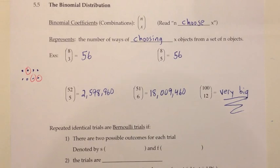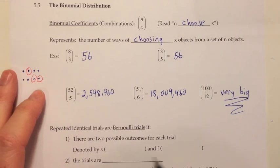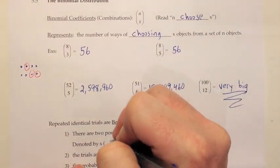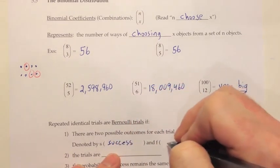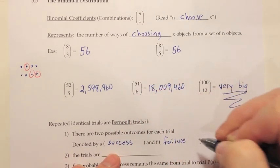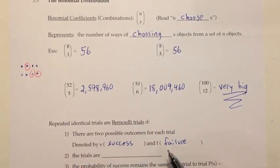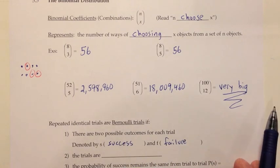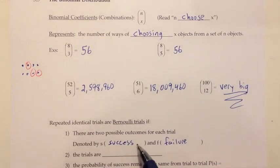The situation where these combinations are going to be handy is in something called repeated identical trials, called Bernoulli trials. They're called Bernoulli if they meet a few conditions: one is they have to have two possible outcomes for each trial, and we refer to those outcomes as success and failure — S for success, F for failure. Success and failure are judged based on whether we saw what we were looking for.